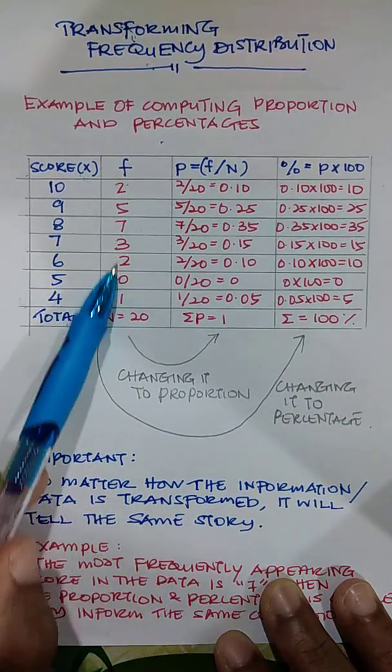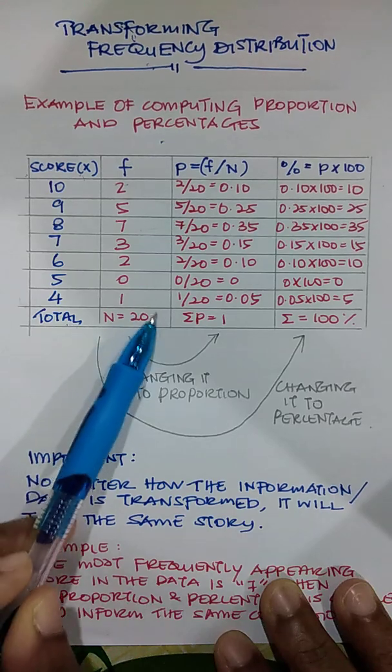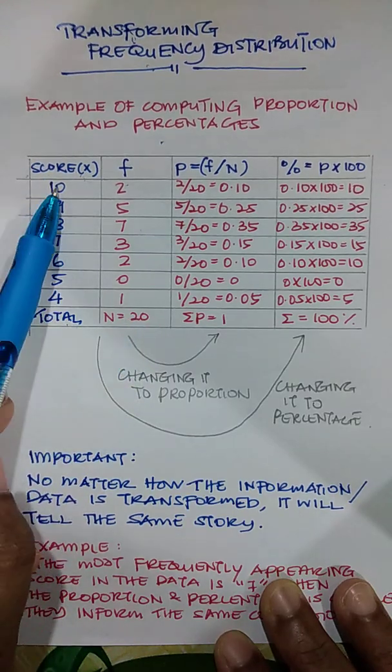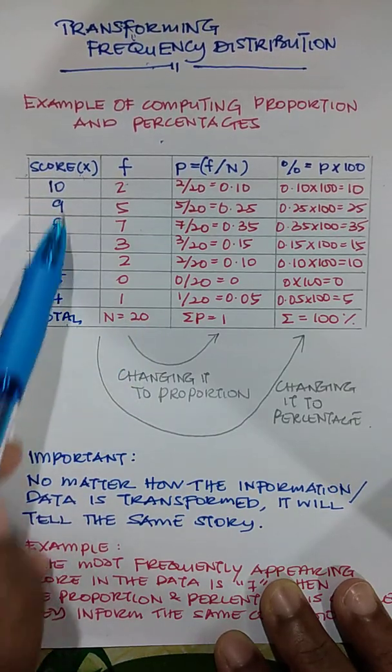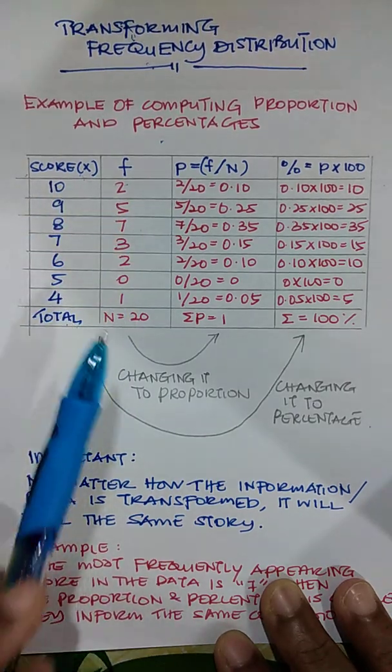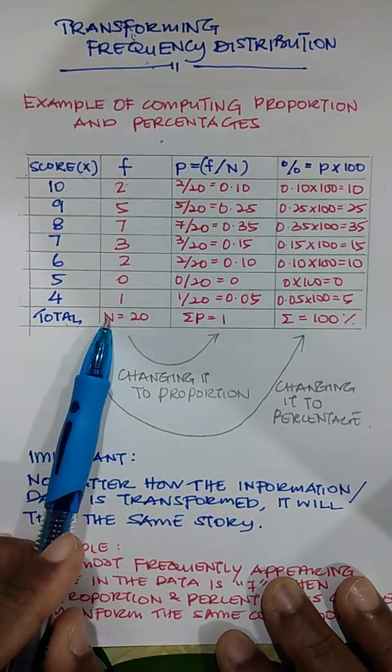So when we add all these frequencies, we will get 20, meaning there are 20 scores in the entire information or entire pool of data that we have received.